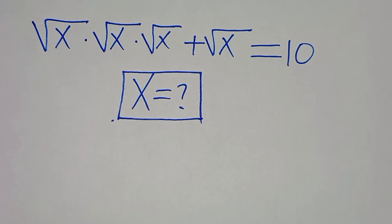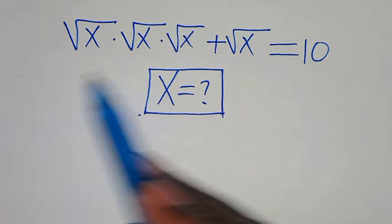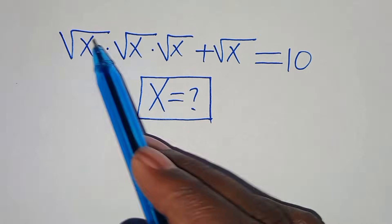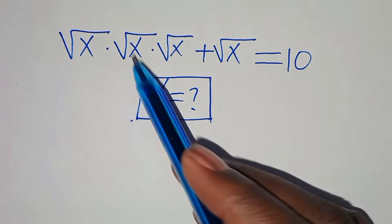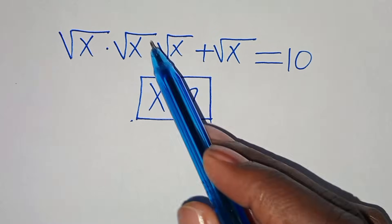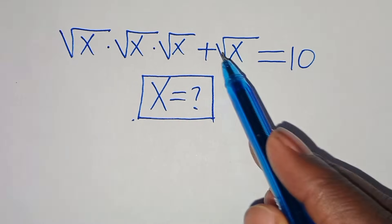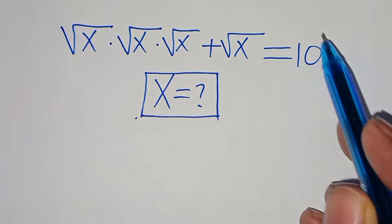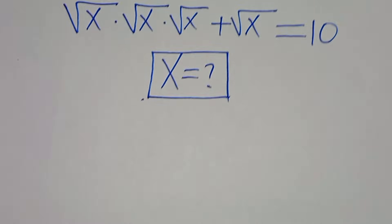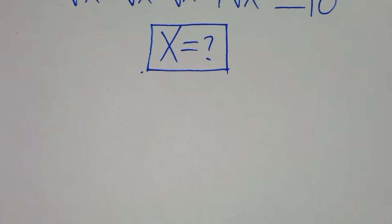Welcome. Solve this nice square root math problem: the square root of x times square root of x times square root of x, plus square root of x, equals 10. So what is the value of x?